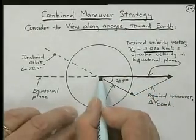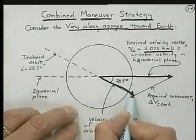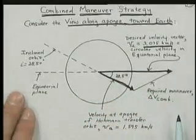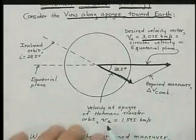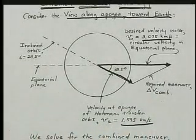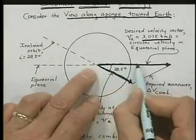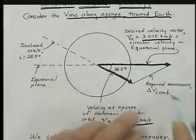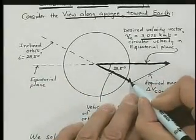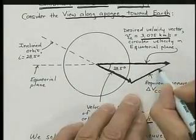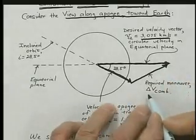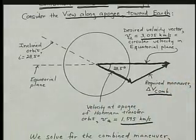The velocity at apogee after doing the first part of the Hohmann transfer and getting out to apogee, we calculated to be 1.595 kilometers per second. So how do we get from here to here? Well, we can do a maneuver along this direction, which we'll call delta V combined.